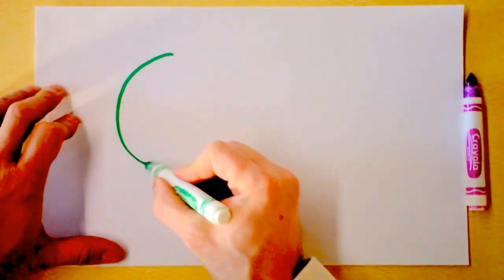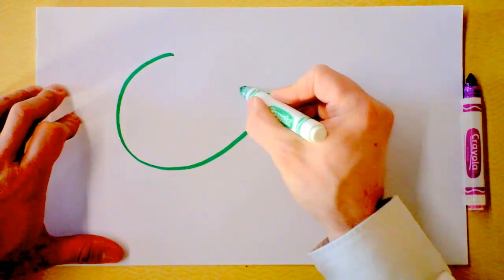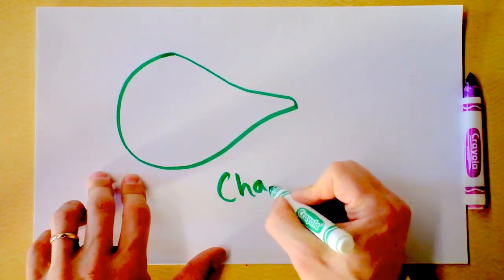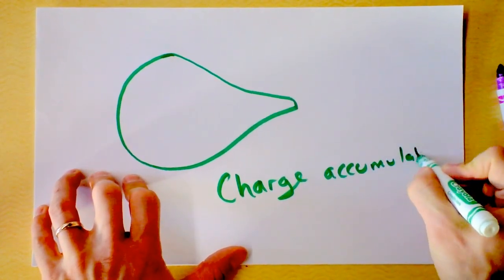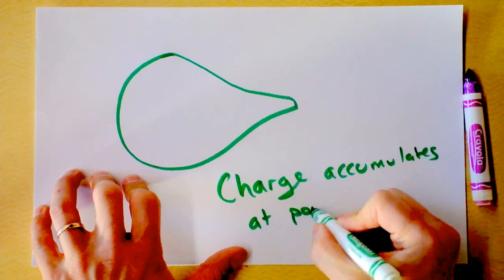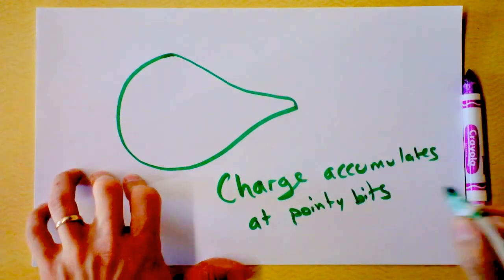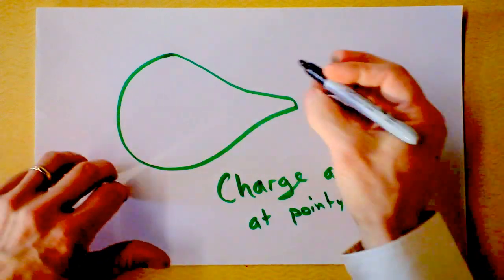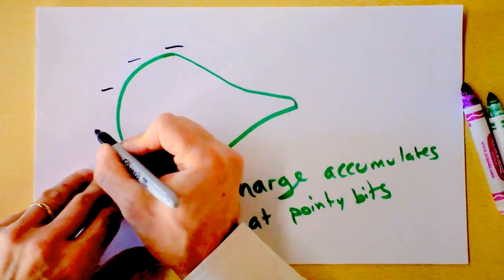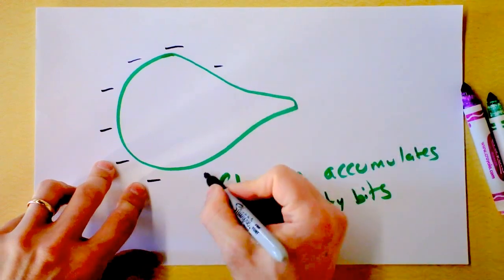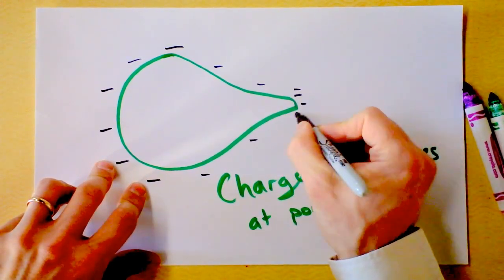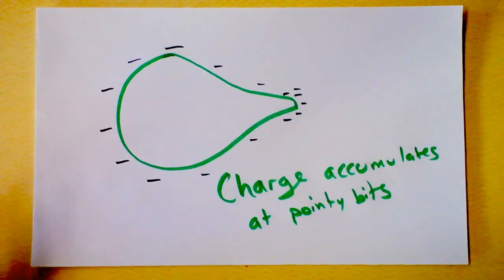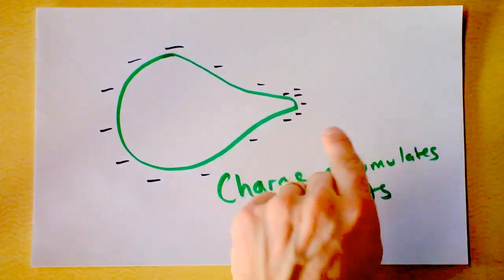Rule number four is the hardest to explain. If I have a teardrop-shaped conductor — maybe it's the head of a bird — charge accumulates at pointy bits. Let's see if we can understand why that might be the case. We've got some negative charges out here, a couple in here, but lots residing on that pointy bit. Negative charges don't like each other, so this feels problematic.